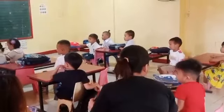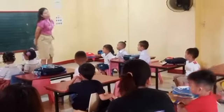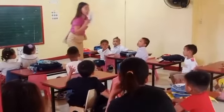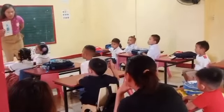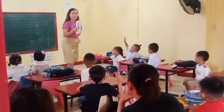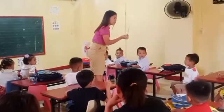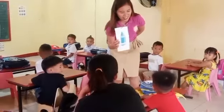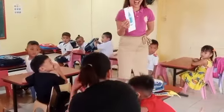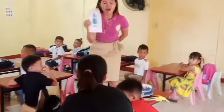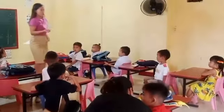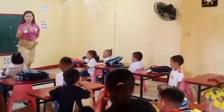Our lesson for today is colors. Okay, first, what color is this? Blue. Okay, very good. What color is this? Blue. This is color blue. Give me an example of things or objects that are color blue. Okay, so there are things that are color blue.